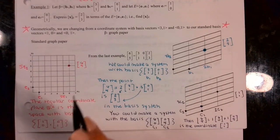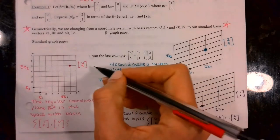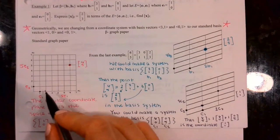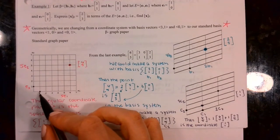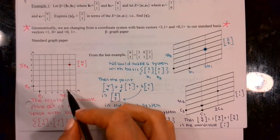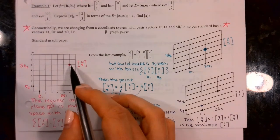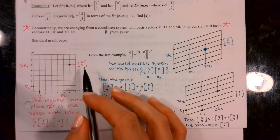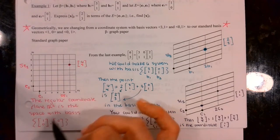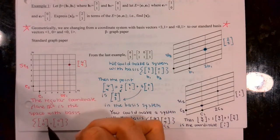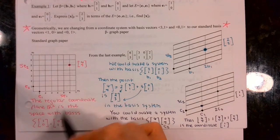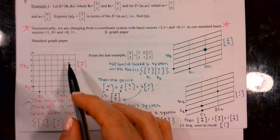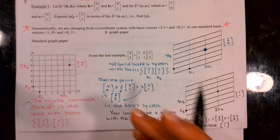The coordinates we've been using our whole life are the coefficients of the basis vectors we would need to add together to get to that location. So I would need to add 6 of the vector (1,0) and 5 of the vector (0,1) to get to the location 6,5. That's how we labeled it.